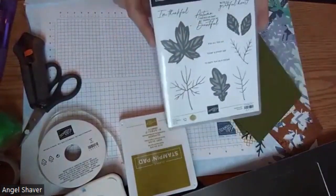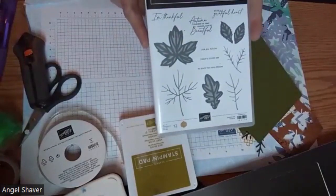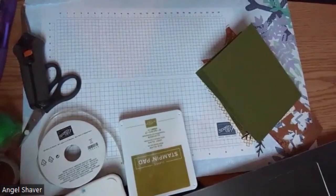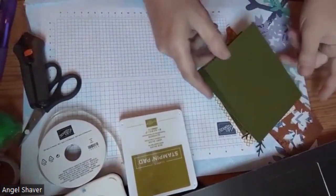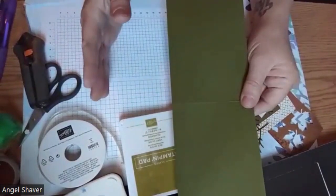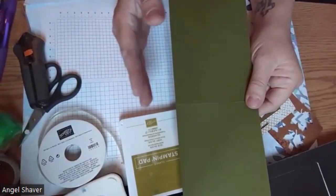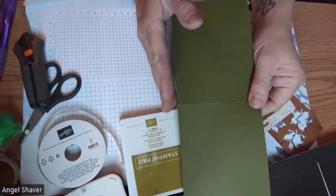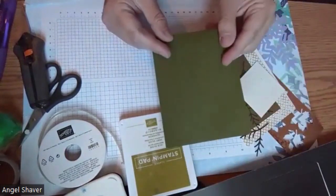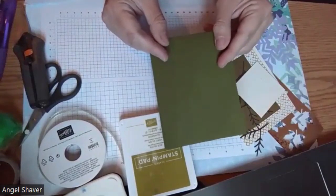I think we are going to be doing some stamping with this stamp set. I have a piece of mossy meadow cardstock, an 8.5 by 11 piece cut in half vertically to make it 4.25 by 11. And when you fold it in half, it's 4.25 by 5.5.